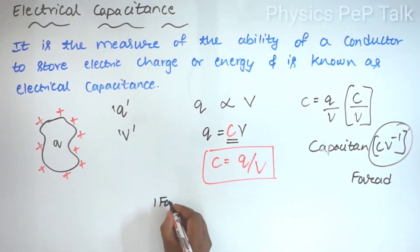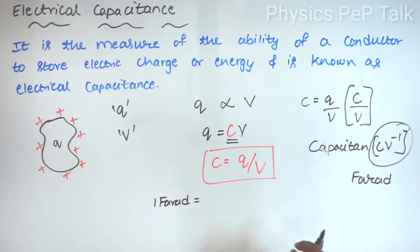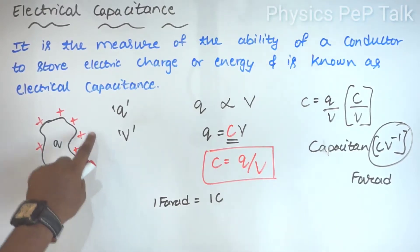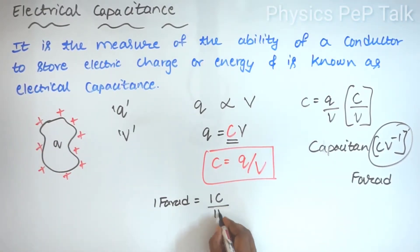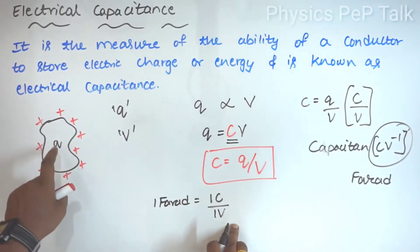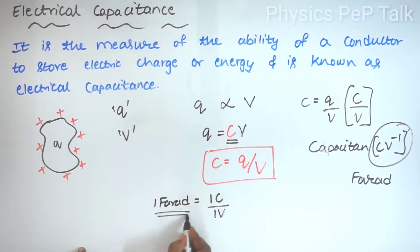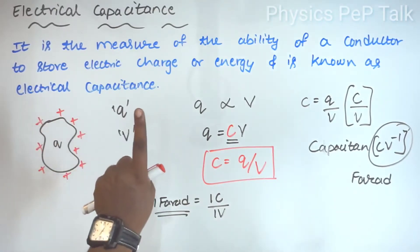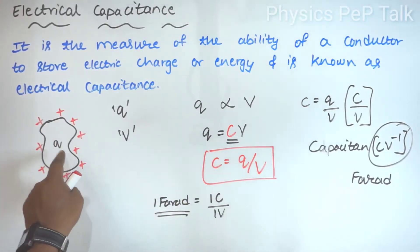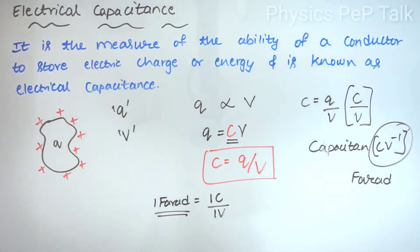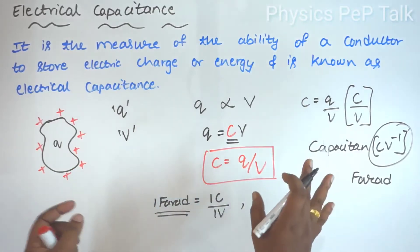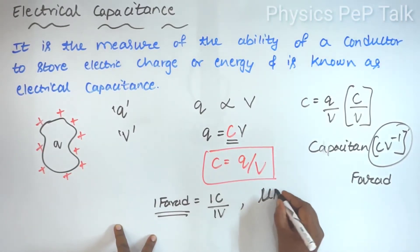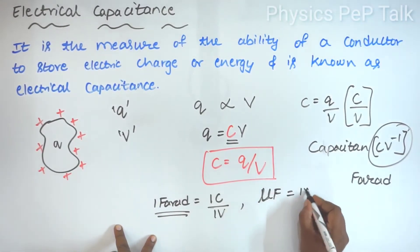Define one farad: if I add a charge of one coulomb to a body and this body raises its potential by one volt, then the capacitance of this body is said to be one farad. In day-to-day experimental usage, basic units of farad are used in terms of microfarad, which is 10 to the power minus 6 farad.